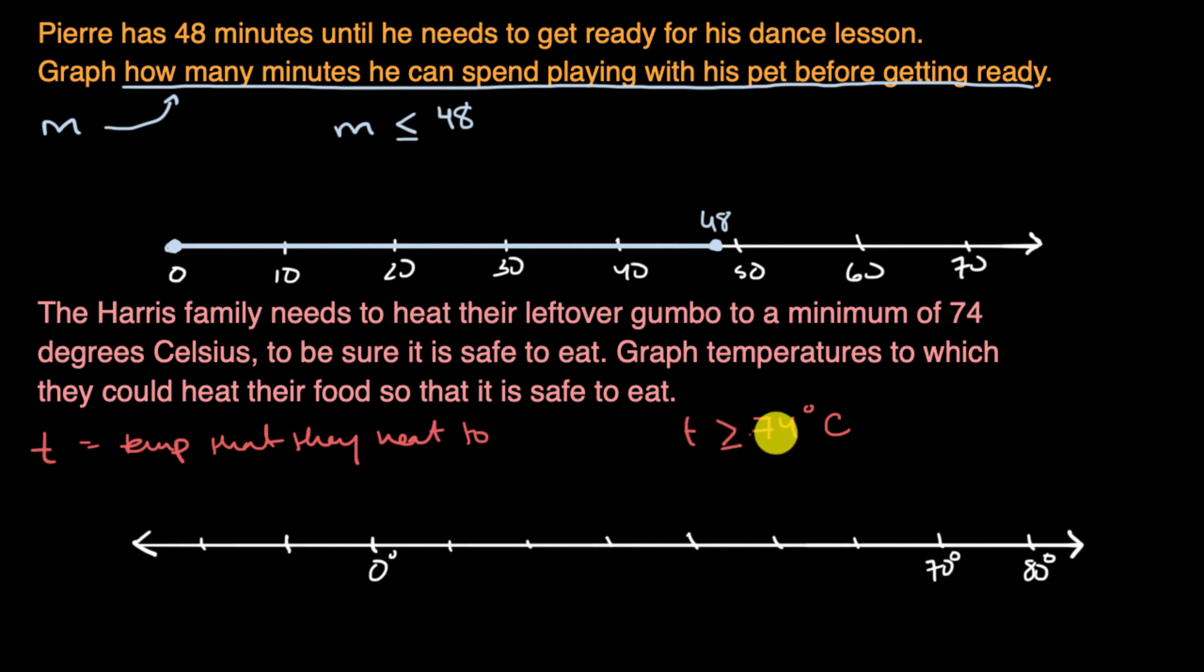If we just had T is greater than 74 degrees Celsius, we would go to 74, which would be right around there. We would put an open circle, and then we would go greater than that. So that's if T was strictly greater than 74 degrees Celsius, but it's greater than or equal to. And so because of that, we are going to fill in this dot right over there. And to be clear, that dot is at 74 degrees. And we're done.